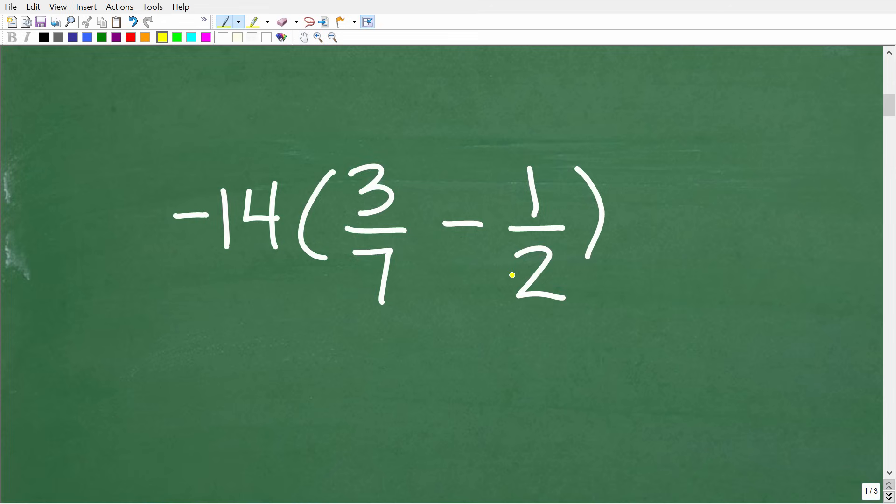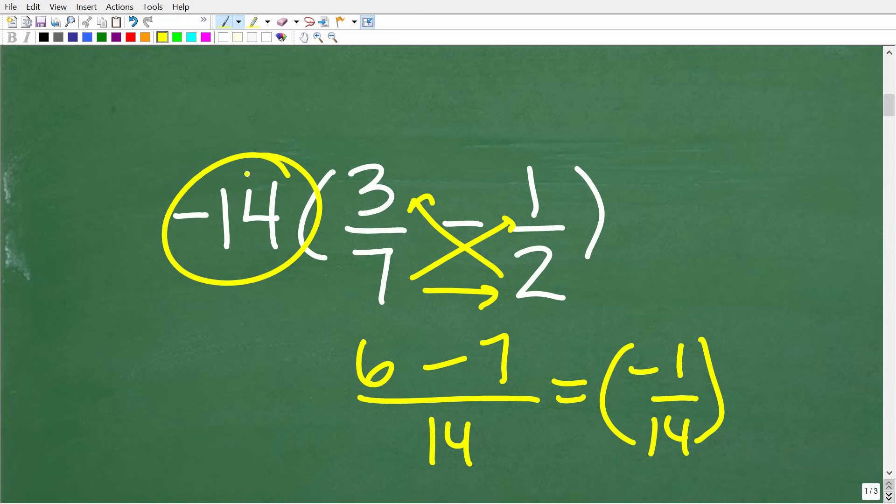But let me go ahead and show you how quickly I can get the answer. So this is going to be 2 times 3, which is 6 minus 7 times 1. That's 7 over 7 times 2, which is 14. So this is going to be negative 1 14th. And I need to multiply that by negative 14. So the answer here is a positive 1.